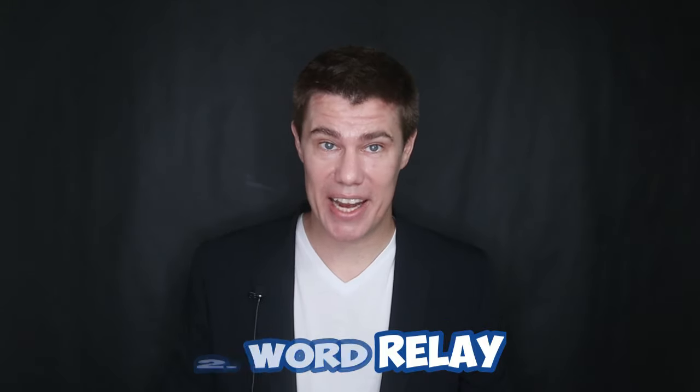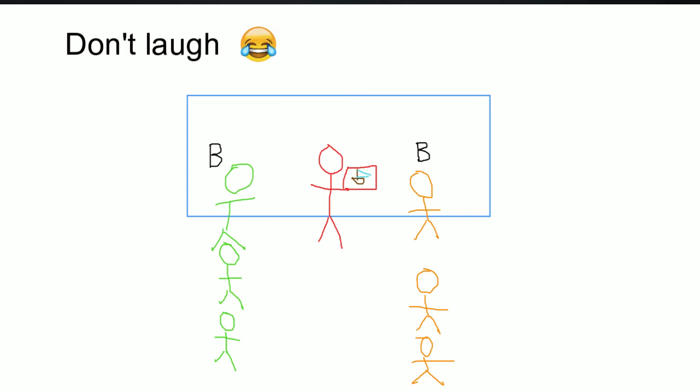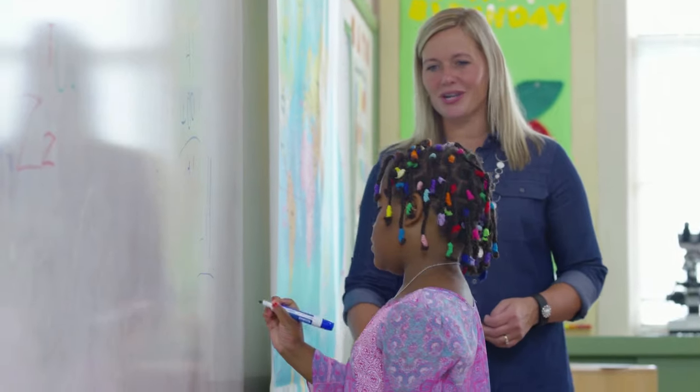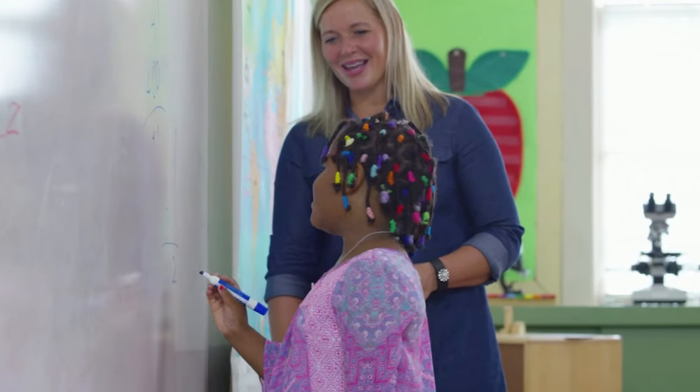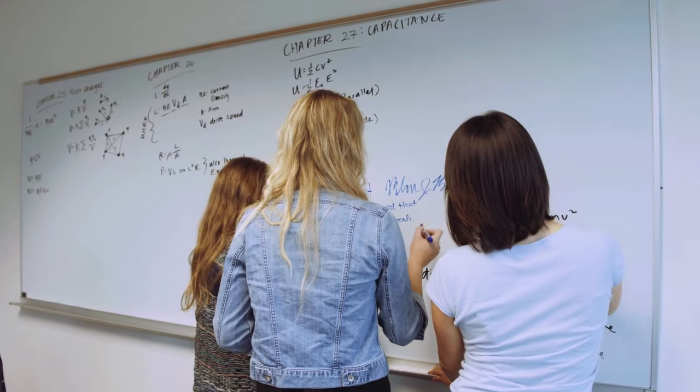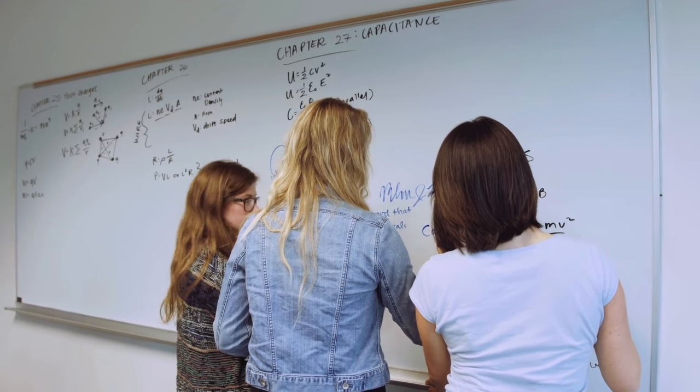Spelling word relay. Here is an energetic spelling game to play with large classes. Divide the students into teams. Each team stands in a line in front of the board. Hold up a flashcard or picture of the word you want the teams to spell. The first student in each team runs to the board and writes the first letter of the word, then runs back and tags the next person, who runs to the board and writes the next letter, and so on. If a student makes a mistake, the next student can correct it but cannot write another letter. The first team to spell the word correctly scores a point. Play several rounds — the team with the most points wins.